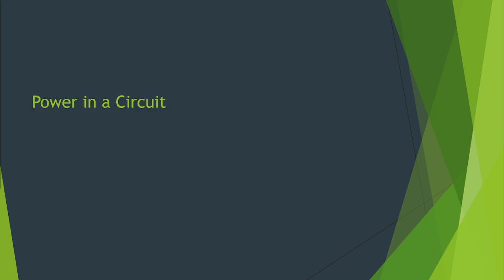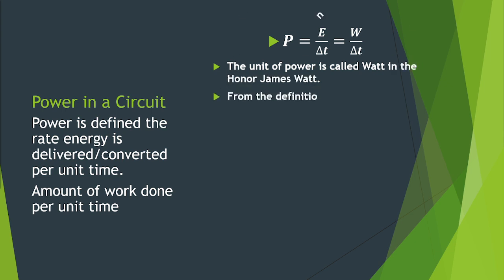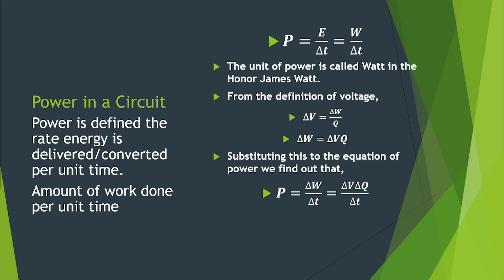We can now try to compute for the power in the circuit. Power is defined as the rate energy is delivered or converted per unit time. This is also defined as the amount of work done per unit time. The formula for power is P is equal to energy E over delta T which is also equal to work W over delta T. The unit of power is called Watt in the honor of James Watt. We can use the definition of voltage to find the amount of work done per unit charge. We see that the change in work denoted by delta W is equal to delta V times the charge Q. Substituting this to the equation of power, we find out that power P is equal to delta V times delta Q over delta T. This is equal to power P is equal to V times I or P is equal to I squared R.